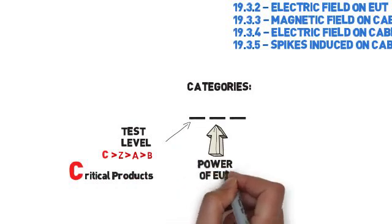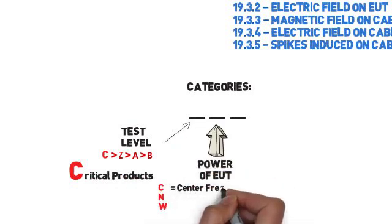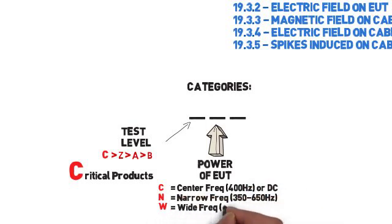The second letter refers to the primary power of the EUT: C being center frequency, N narrow frequency, W wide frequency.